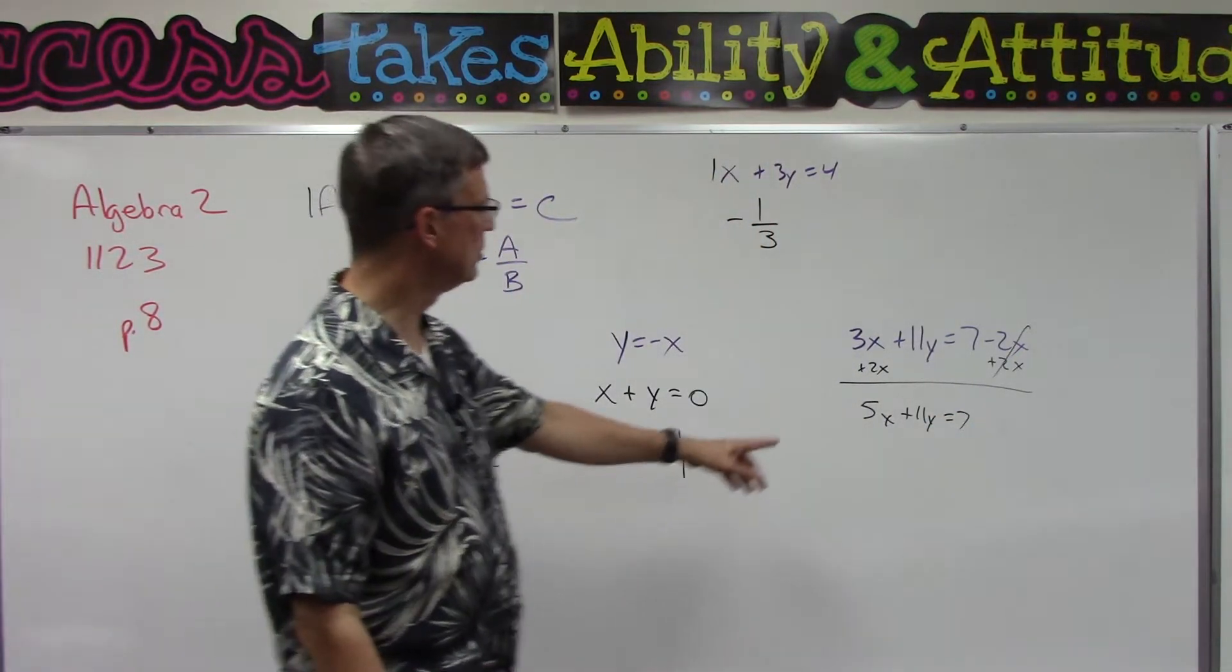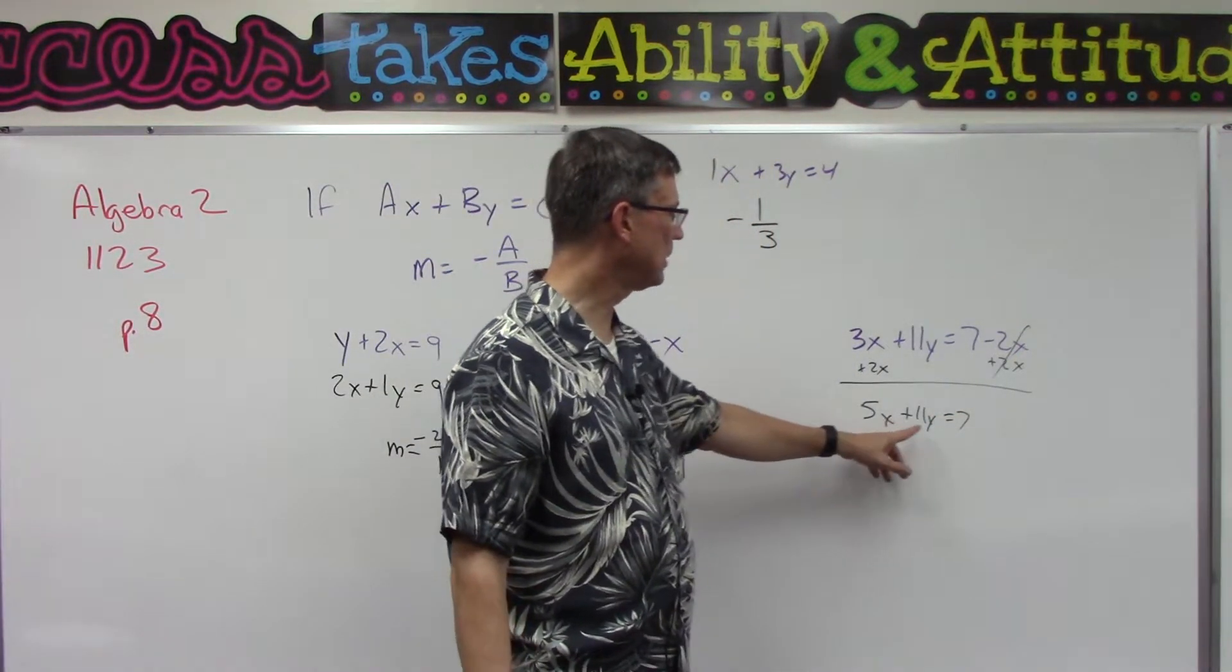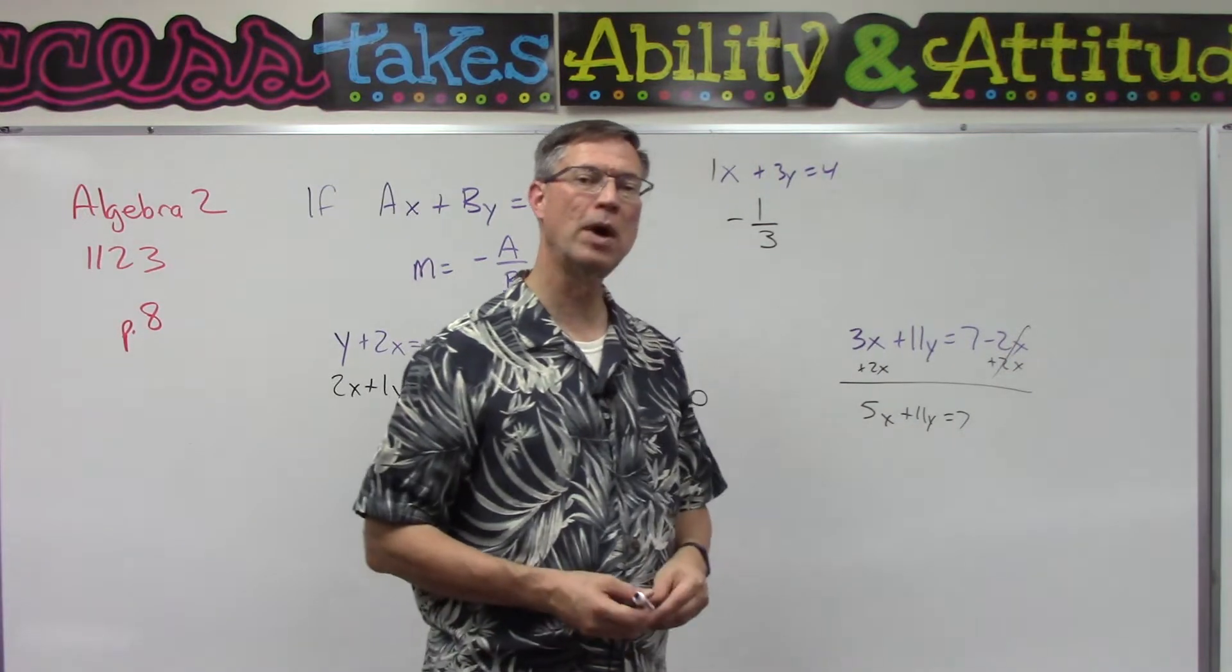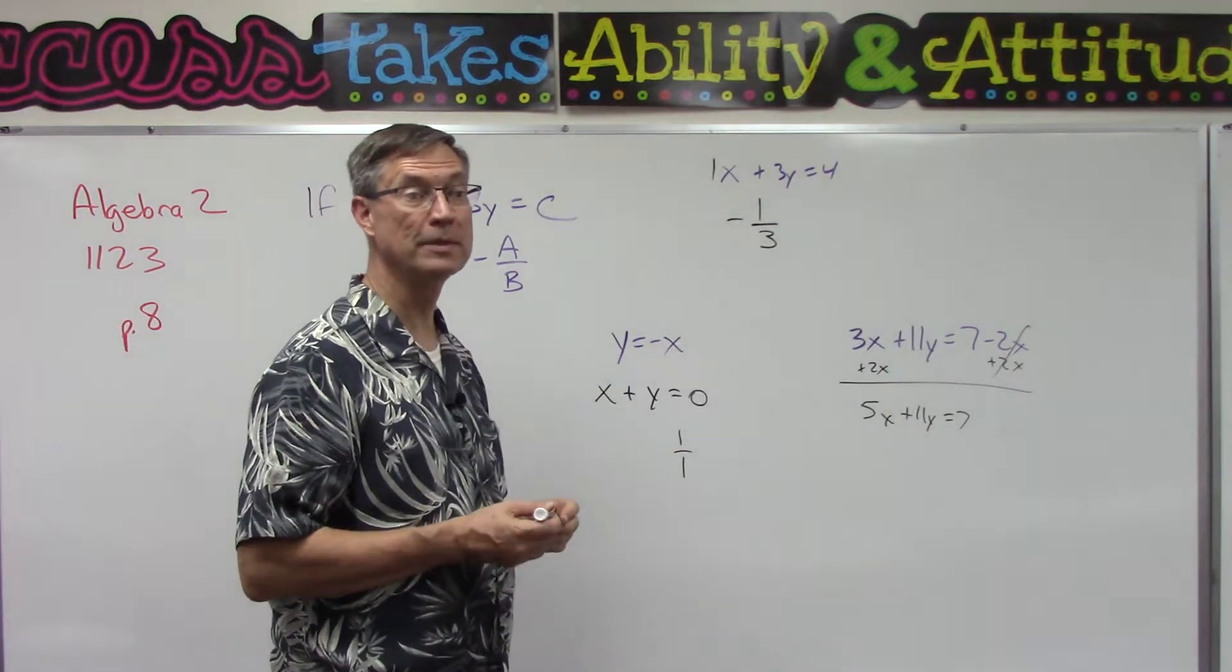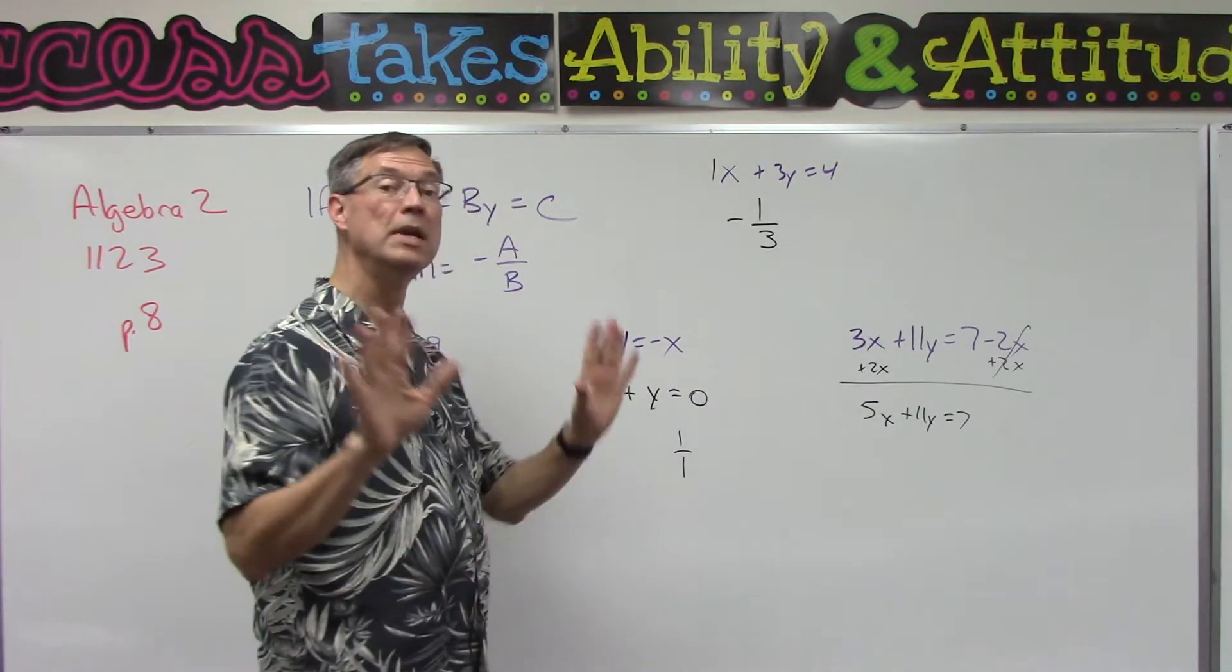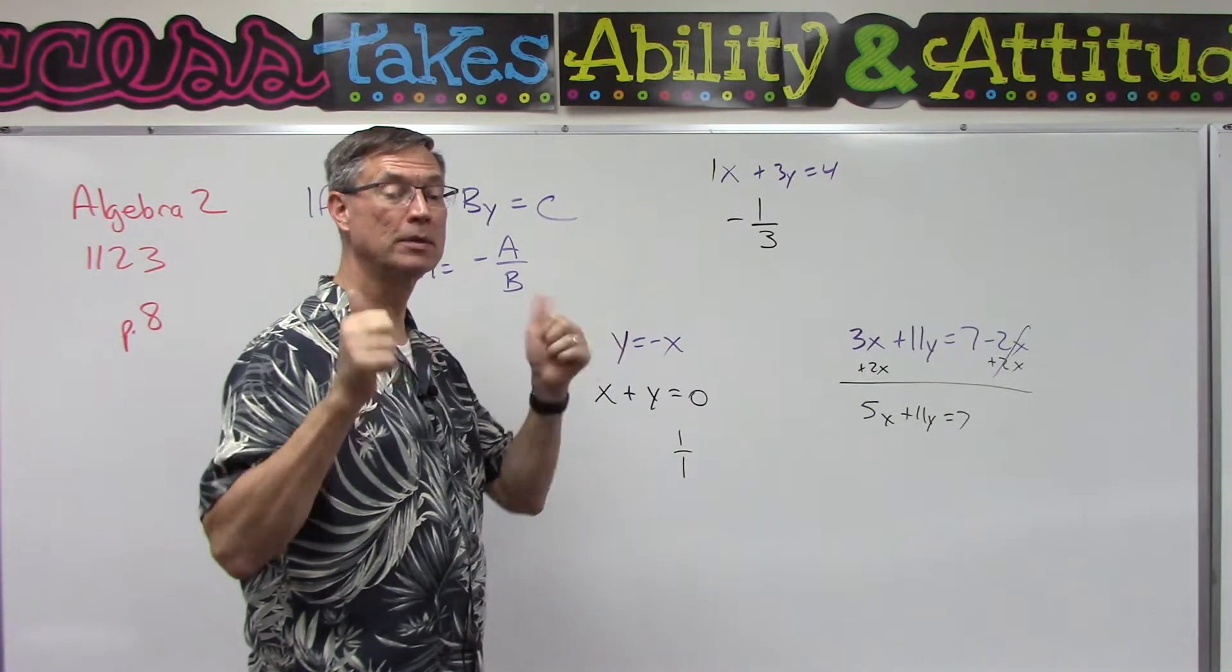And that way I can get rid of that, and I have 5x plus 11y equals—all right, I'm not going to go any further. You see what you've got to do there: put the x coefficient over the y coefficient and then change the sign to its opposite. All right, enough. Score correct. You should be good for checkup one.